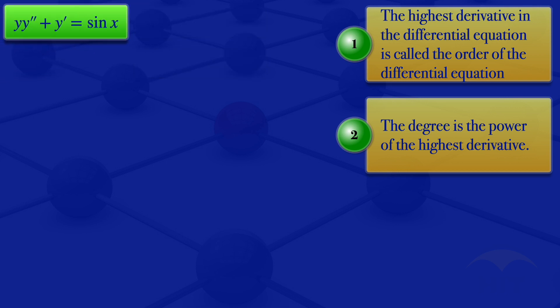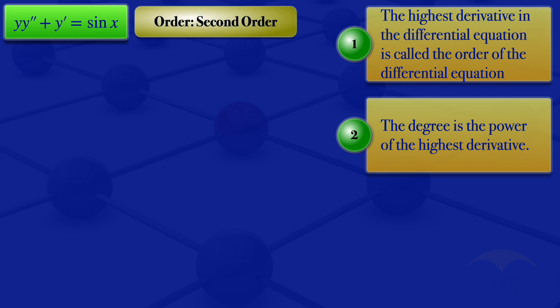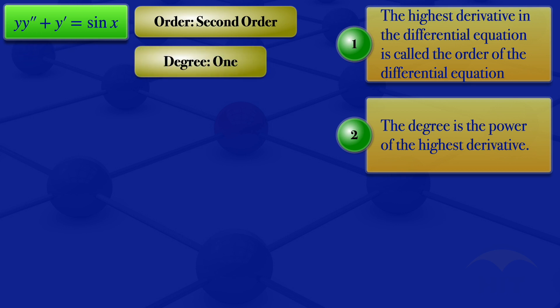Moving on to the next differential equation: y multiplied by y'' plus y' equals sin x. We check the order by looking at the highest derivative, which is y'' — the second derivative — so the order is second order. For the degree, we look at the power of this highest derivative, which is 1, so the degree is 1. This is a second order ODE with degree 1.